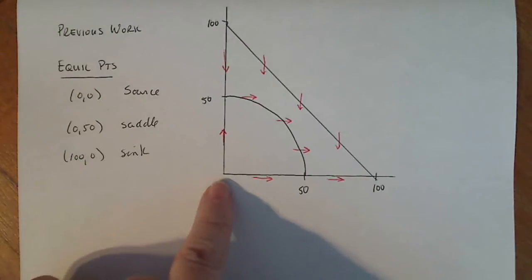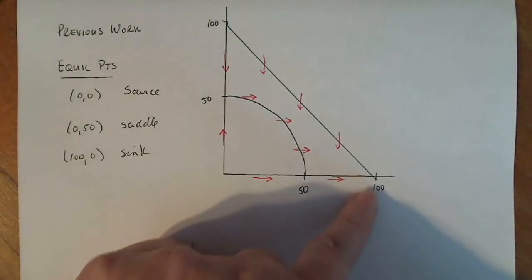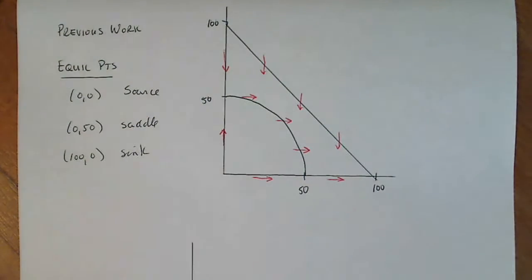So at (0,0) I have a source, at (0,50) I have a saddle, and I have a sink here at (100,0). These are guidelines that are going to help me determine what's going to happen when I draw my phase portrait.